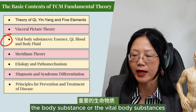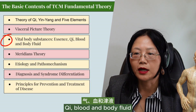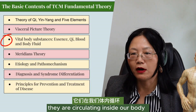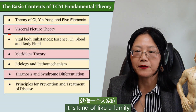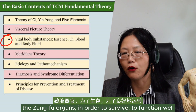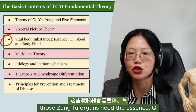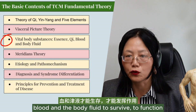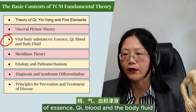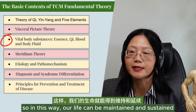You are going to study the vital body substances, which are essence, qi, blood, and body fluid. Those four substances circulate inside our body. The zhangfu organs, in order to survive and function well, need essence, qi, blood, and body fluid. When they function well, they can produce more essence, qi, blood, and body fluid. In this way, our life can be maintained and sustained.